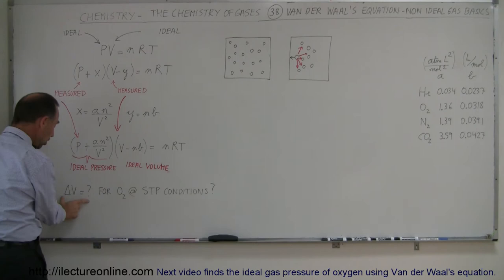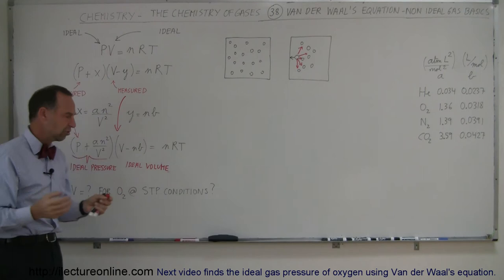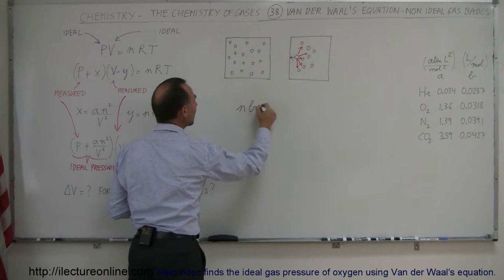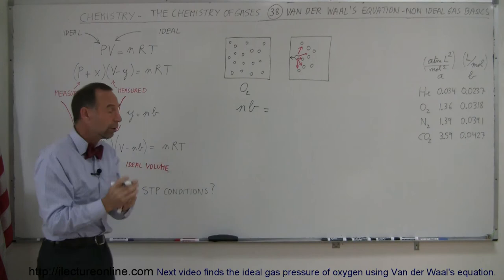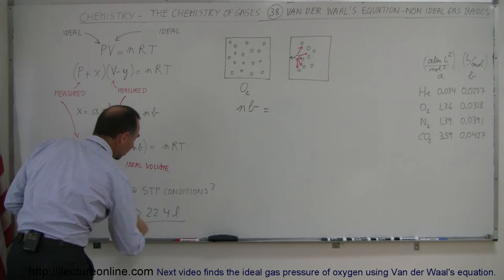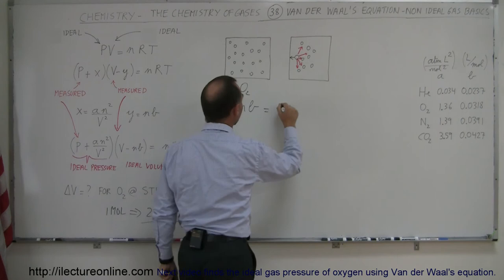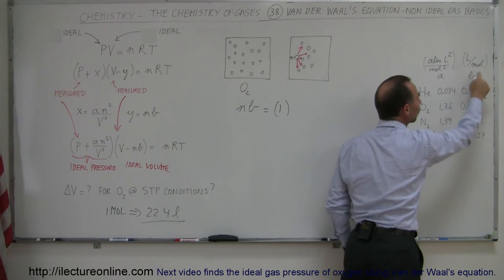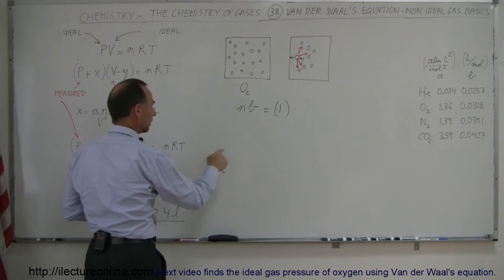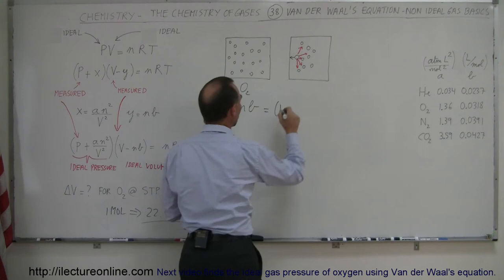Let's do an example. We want to know the change in volume caused by oxygen molecules at STP conditions. At STP, molecules are not very close together, so the difference shouldn't be large. The delta V is caused by nb. For one mole of gas at STP, the ideal volume is 22.4 liters. The constant b for oxygen is 0.0318 liters per mole.